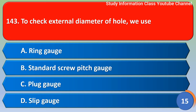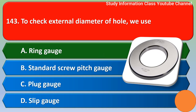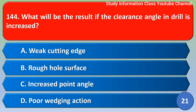Next question: To check the external diameter of a shaft, we use — Option A: ring gauge, Option B: standard screw pitch gauge, Option C: plug gauge, Option D: slip gauge. The correct answer is Option A, ring gauge.